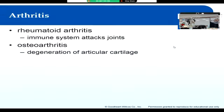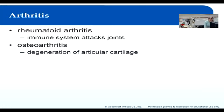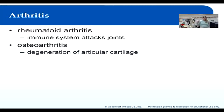Rheumatoid arthritis is really debilitating. It's not something people just get over. It's actually an immune disease where your body attacks your own joints — it's not caused by overuse. This is an immune system disorder that causes ongoing damage to the joints.